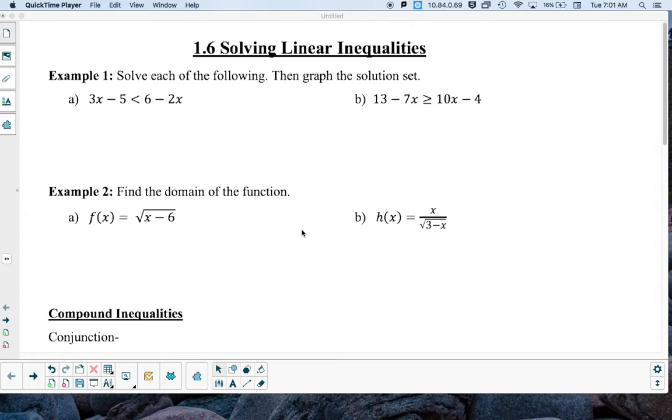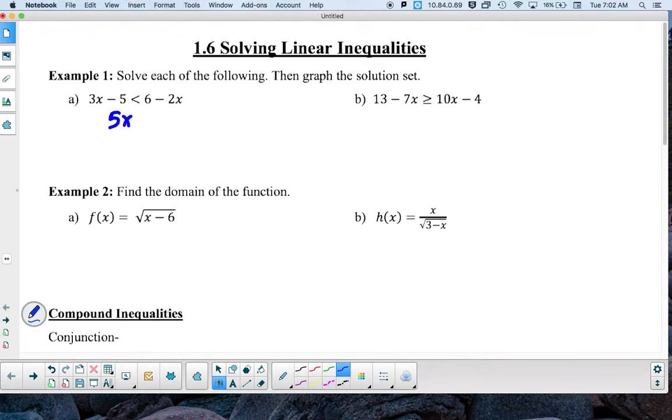So for example, in 1a, we're going to get our x's to one side, so we add 2x to both sides to get 5x, and then add 5 to both sides, so we get 5x is less than 11. So we divide by 5, so we get that x is less than 11 over 5.